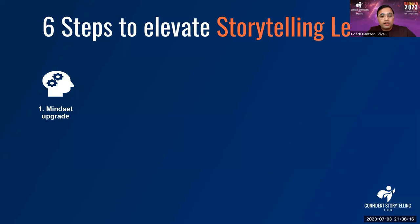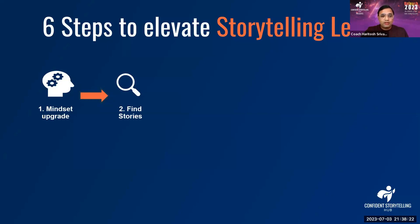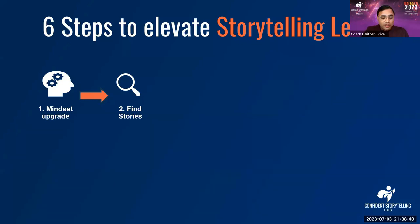The second step is you have to find the right, relevant, contextual story. This might not be as important when you are at level one, because you are still struggling to tell stories. But when you are going from level two to level three or level three to level four, you have to tell the right stories. Because as good as storytelling is, if you tell the wrong story, it can backfire on you as well.